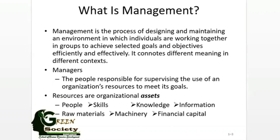We have divided resources into four groups. The first one is physical resources — land, building, machinery, furniture — things that you can touch and see. Then we have human resources: human knowledge, skills, attitude, abilities, competencies, core competencies, and distinctive competencies. These all are human resources.